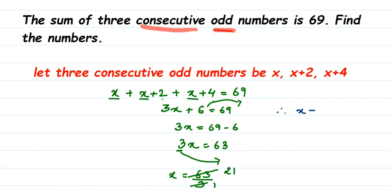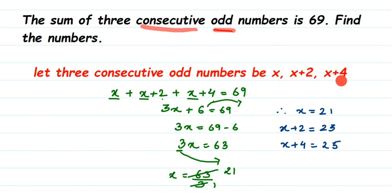If x equals 21, then the second odd number x plus 2 is 21 plus 2, which is 23, and the third x plus 4 is 25. So 21, 23, and 25 are the three consecutive odd numbers. You can cross-check: 21 plus 23 plus 25 equals 69. I hope this question is clear. If you have any doubts, drop a comment and I'll try to make a video on it. Thank you for watching!